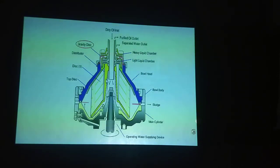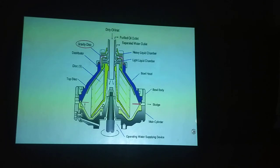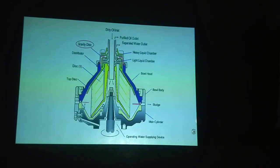When the dirty oil is getting in, it will pass through the distributor and rise up through the disc stack, and the clean oil will pass through the centripetal pump, gain pressure, and go out from the purifier outlet. The sludge pot, at specific intervals of time, will discharge the sludge depending upon the cycle — one hour, two hours, half an hour, depending upon the dirtiness of the oil.